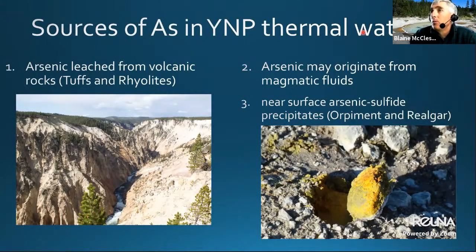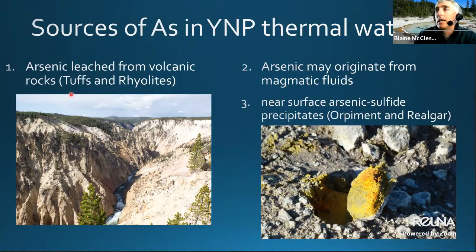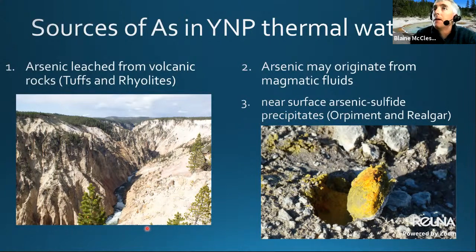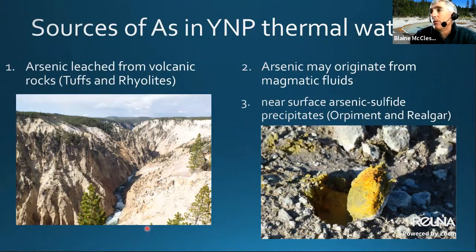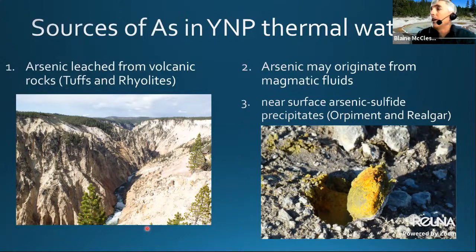Arsenic in Yellowstone surface water is primarily derived from thermal fluids. The enrichment of arsenic has been attributed to high-temperature leaching of reservoir rocks, primarily rhyolites and tuffs. Arsenic may also originate from magmatic fluids, though evidence is limited. Additionally, near-surface arsenic sulfides — primarily orpiment and realgar — are common in parts of Norris Geyser Basin, and can act as both a sink during drier periods and a potential source during wetter periods and during formation of new features.